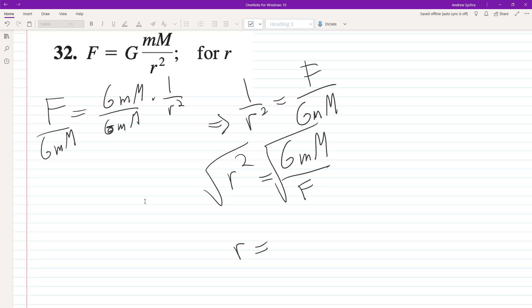So we end up with r is equal to the square root of big G, little m, big M, all over F. And that's it.